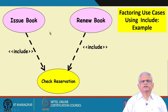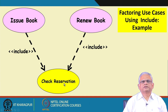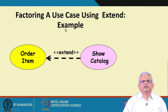Effectively, in this diagram we have factored 'issue book' and 'renew book' into simpler use cases and identified the common use case 'check reservation' that is reused in both. This common use case is developed only once; otherwise there would be duplication when developing issue book and renew book. Now let us look at the third way of factoring: the extend relation.